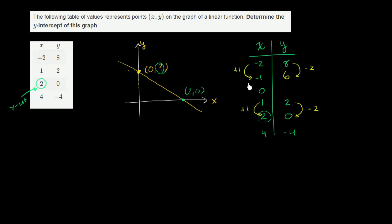So y is going to be 6 here. When x increases by 1 again, y is going to decrease by 2, so we're going to get to 4. And we see it works, because if we increase by 1 again, then it is indeed the case that y decreased by 2.